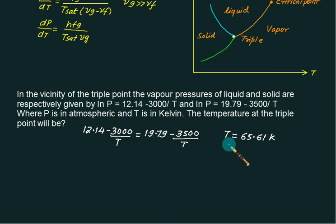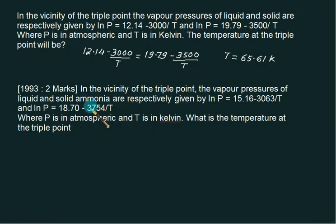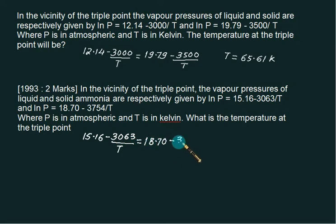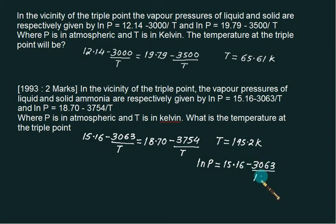A question asked in 1993 requires finding a triple point given two pressure equations. Equating them: 15.16 − 3063/T = 18.70 − 3754/T. Solving gives the triple point as 195.2 Kelvin. To find the pressure at the triple point, substitute T = 195.2 into ln(p) = 15.16 − 3063/T, giving p = 0.587 atmospheres.